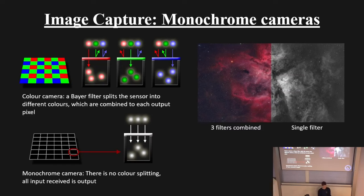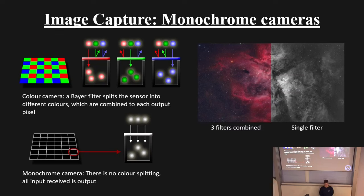Monochrome cameras are slightly more expensive because they're not widely produced — you essentially take a colour camera, remove the Bayer filter from the chip, and put it into a different housing. They're very much the upper end of astrophotography equipment, but almost every professional observatory uses them, so they're really good bits of kit.